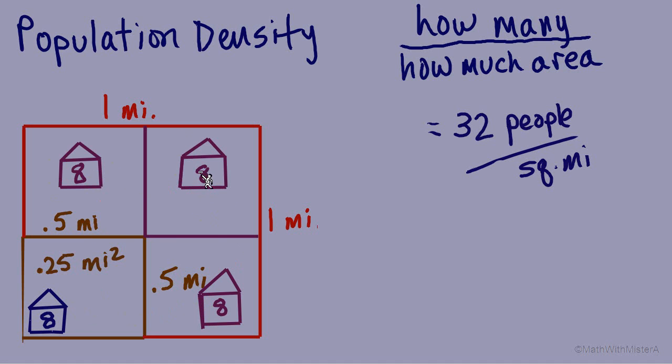So we've changed the size of the land, but also changed how many people were there. But it gave an equivalent balance of total people per total area, whether we're looking at just eight people per a quarter square mile, or how many people, 32, for an entire square mile.